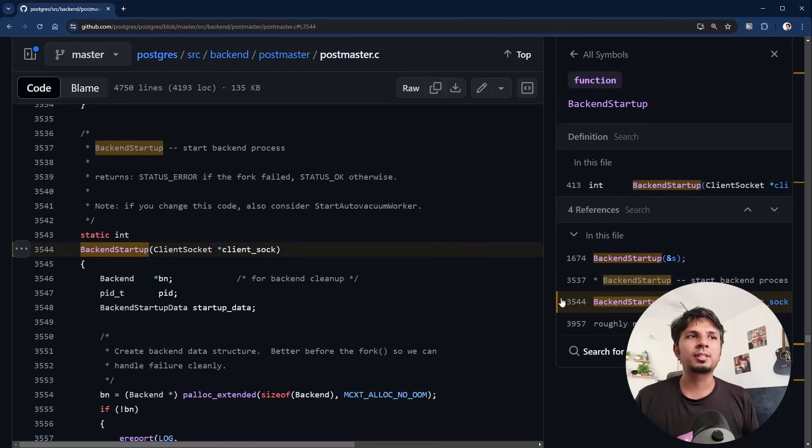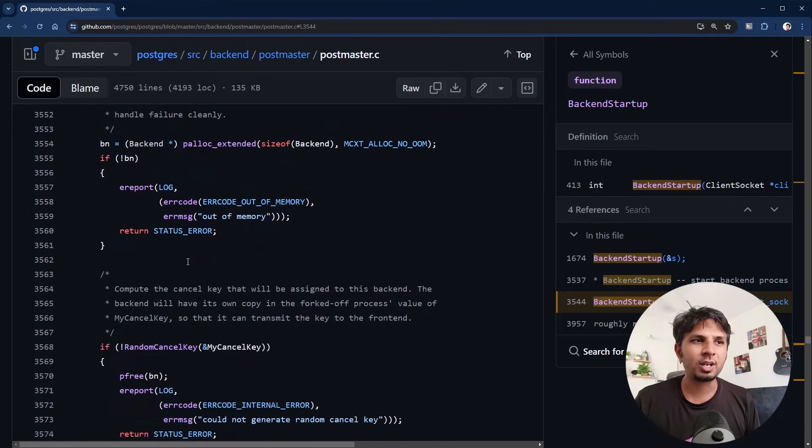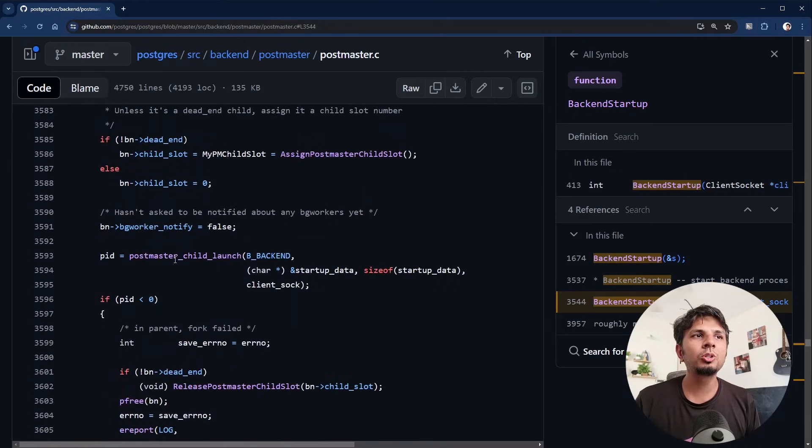I see what this process is doing in backend_start. It is doing some basic allocations and making a call to postmaster_child_launch. Postmaster_child_launch is basically returning the process ID. Here we see something around new process getting forked out. So postmaster_child_launch gets that this is a type of backend process, gets the startup data and the socket connection so that the child process can now use the socket connection to do whatever it wants to do.